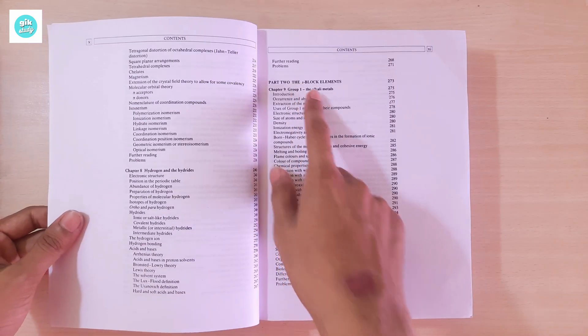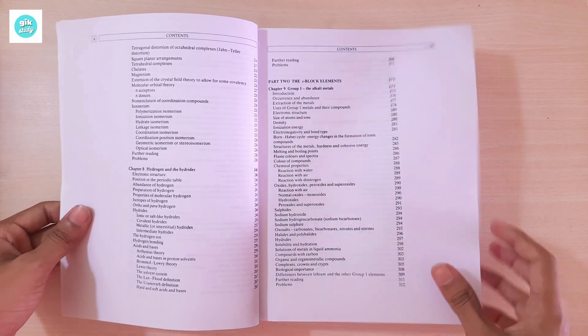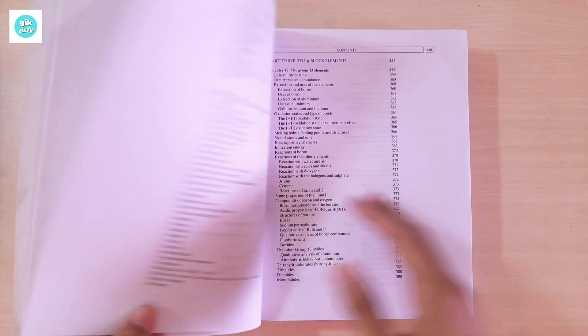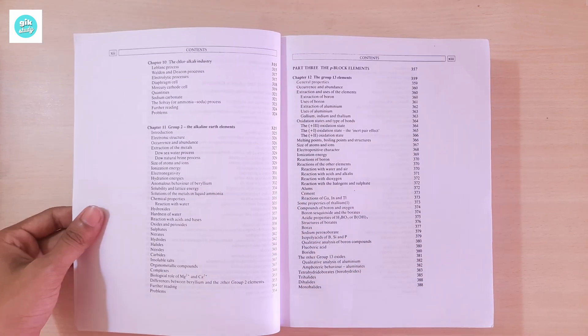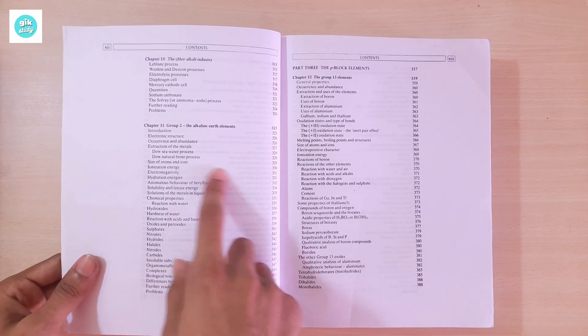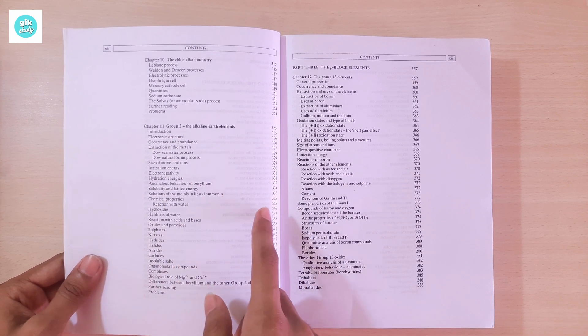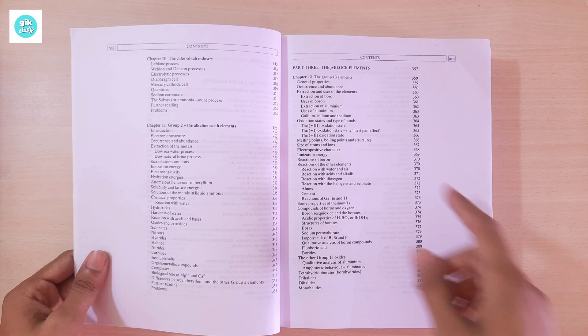Part Two: S-Block Elements. Chapter 9: Group 1, the Alkali Metals. Chapter 10: The Chlor-Alkali Industry. Chapter 11: Group 2, the Alkaline Earth Metals.